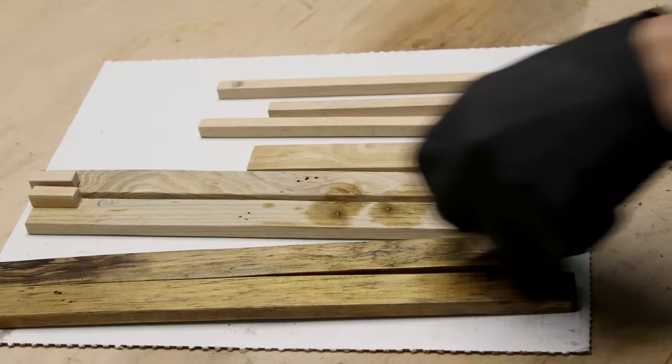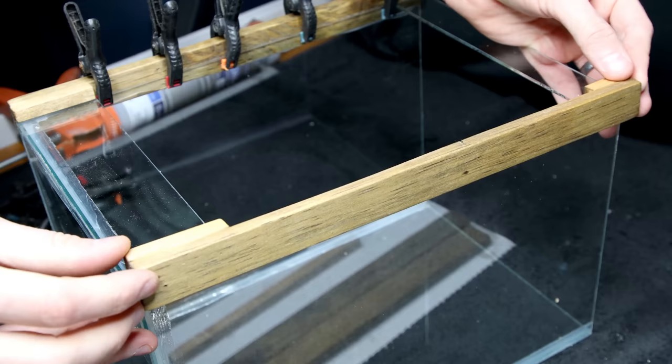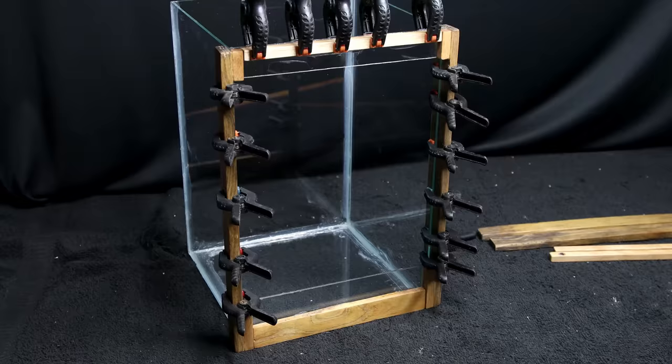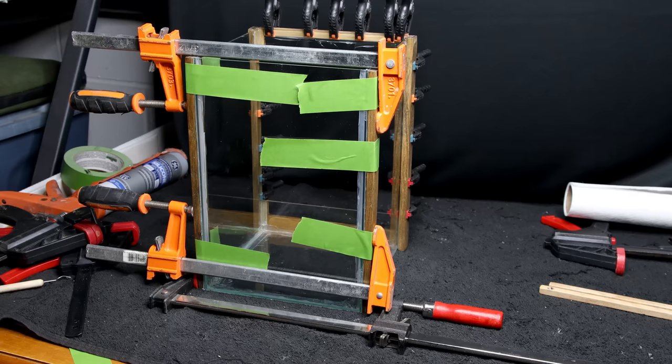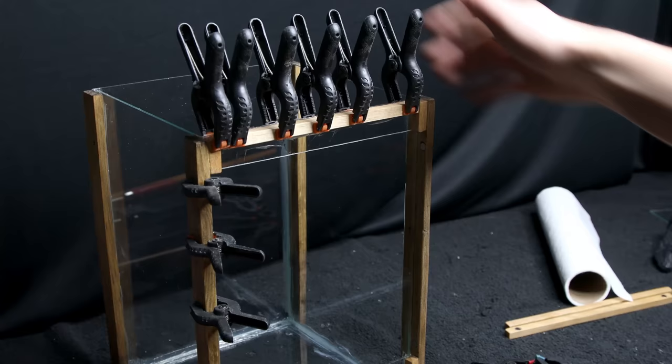I let the stain dry and then I went on to secure the boards to the glass. I applied silicone along the boards and clamped them down. I secured the front and back boards first. After the silicone dried, I went on to add the remaining pieces like before.